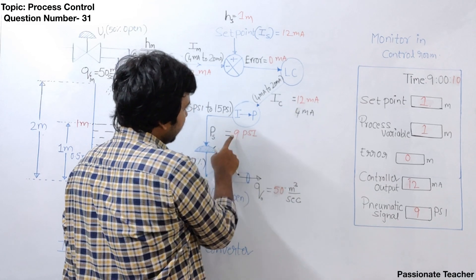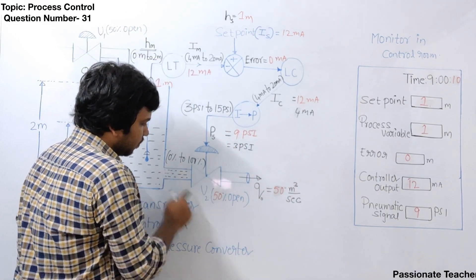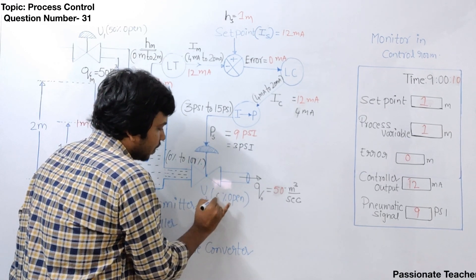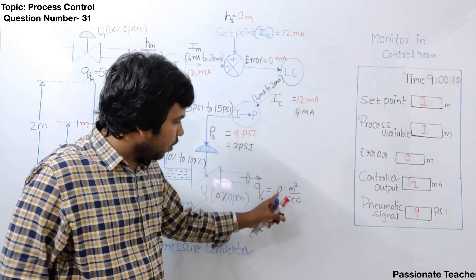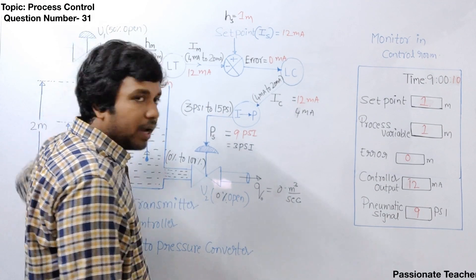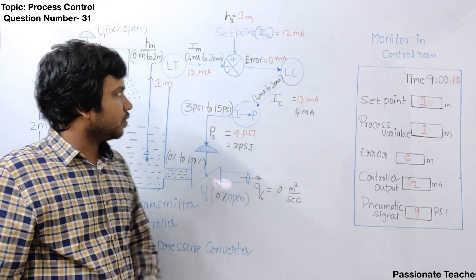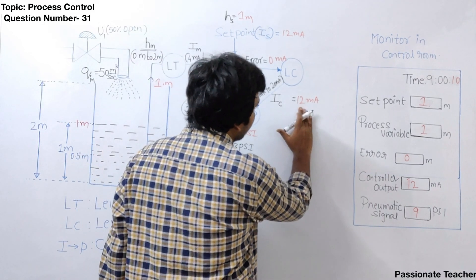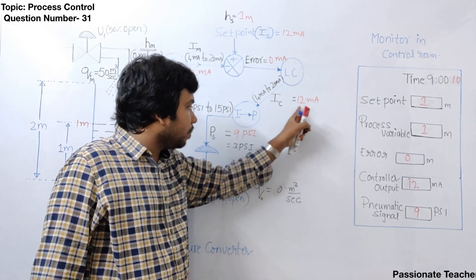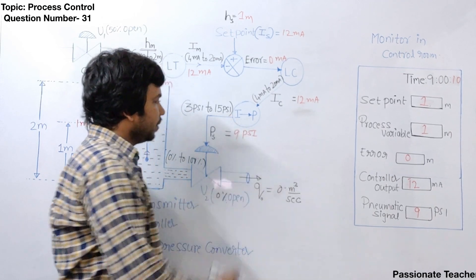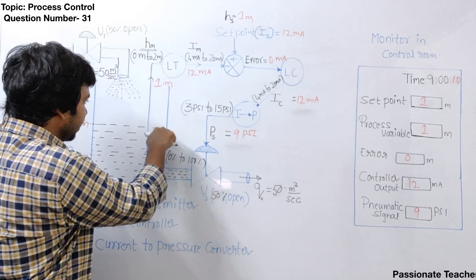If it generates 4 mA, the pressure would be 3 psi, which means the valve is 0% open — fully closed. If the valve is fully closed, the output flow rate becomes 0 cubic meters per second. But the input flow rate is still 50 cubic meters per second, so the water level would jump above 1 meter. This is why when the error is 0, the controller output should not be 4 mA but must be 12 mA — so the valve stays at 50% open, output matches input, and the water level stagnates.